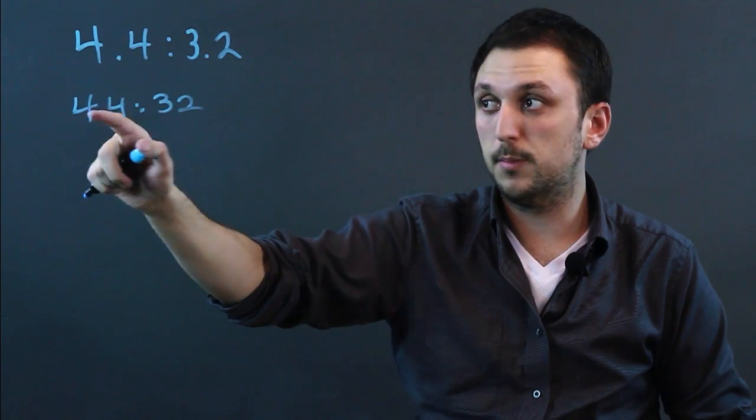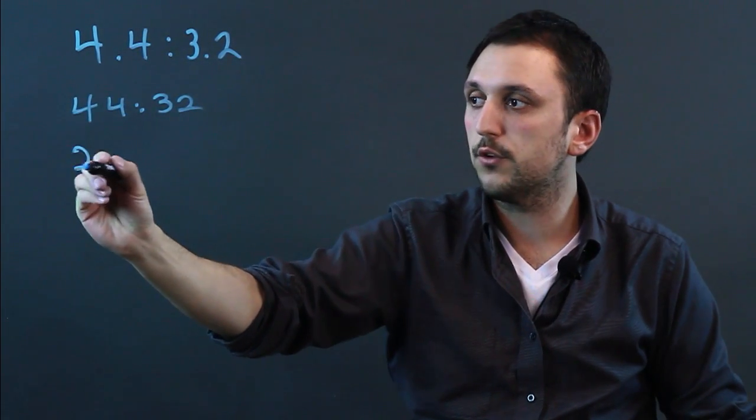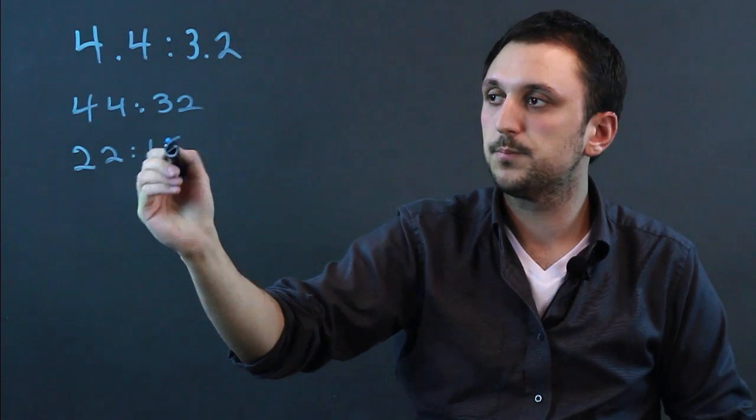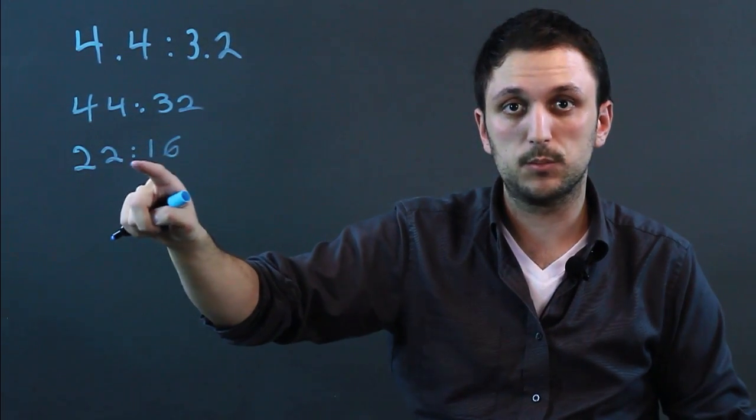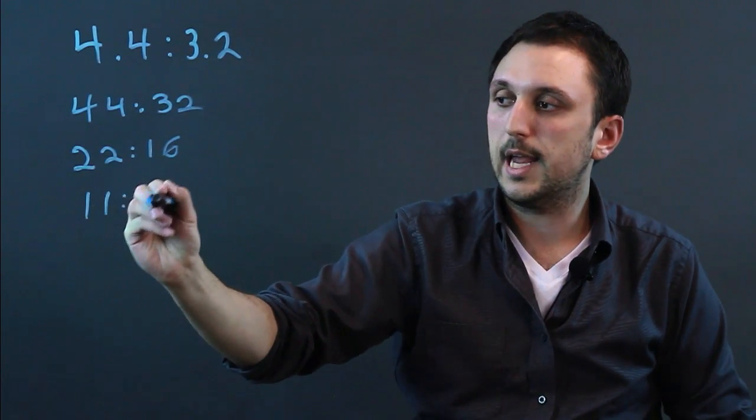Now, you know they're both divisible by 2, so we can do that first, and we get 22 to 16. And then these are both divisible by 2, so we can say 11 to 8.